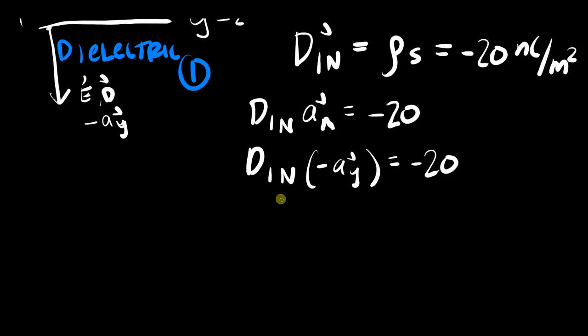All right, so then from here you can multiply both sides by negative 1. And because all of D₁ in the normal direction goes in the aᵧ direction, you can then say...